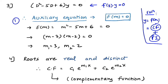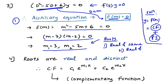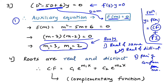To find the complementary function, first get the auxiliary equation. Take f(D) and replace D with m to get f(m) = 0, then solve for the roots. There are three types of roots: Type 1 — real and same; Type 2 — real and distinct; Type 3 — a pair of complex numbers. In this question the roots are 3 and 2, which are real and distinct (Type 2).